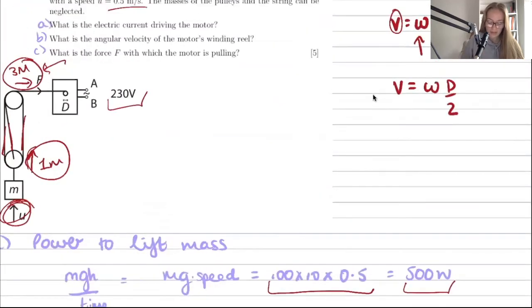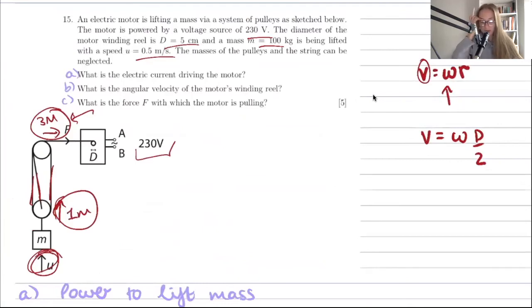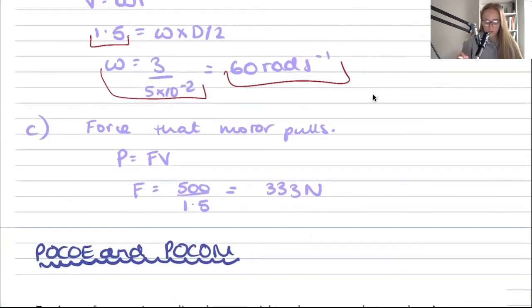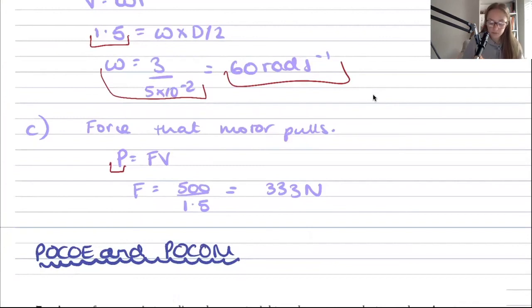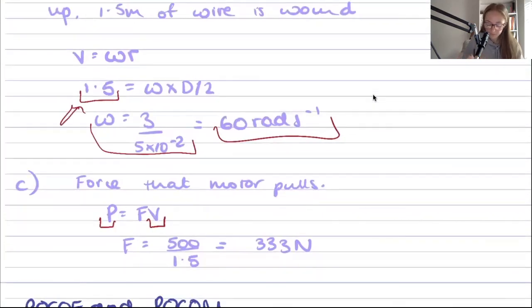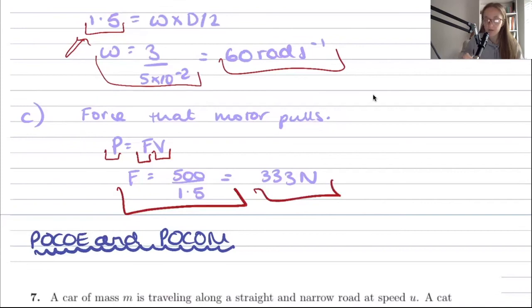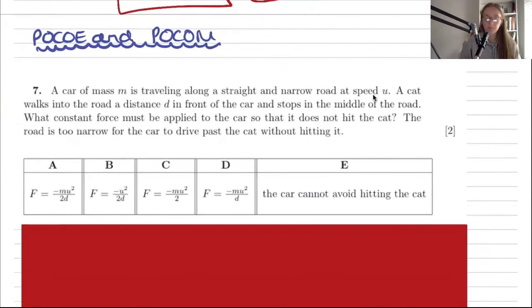Finally, using P = Fv with P = 500 W and v = 1.5 m/s gives the pulling force F = 500/1.5 = 333 N.